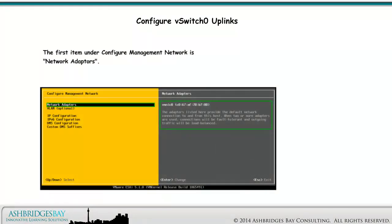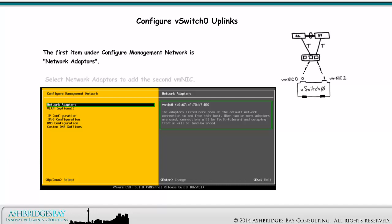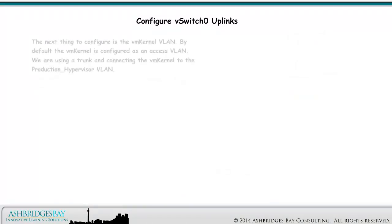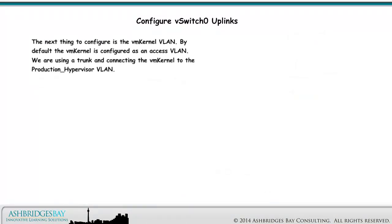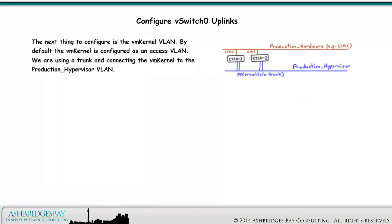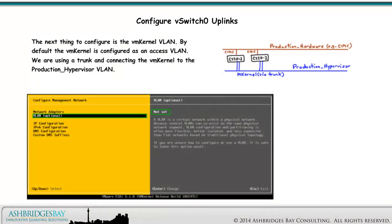The rest of the configuration is done in the Configure Management Network menus. Select Configure Management Network and press Enter. The first item under Configure Management Network is Network Adapters. By default, only the first adapter is configured as an uplink for vSwitch0. Select Network Adapters to add the second VM NIC. The next thing to configure is the VM kernel VLAN. By default, the VM kernel is configured as an access VLAN. We are using a trunk and connecting the VM kernel to the production hypervisor VLAN.